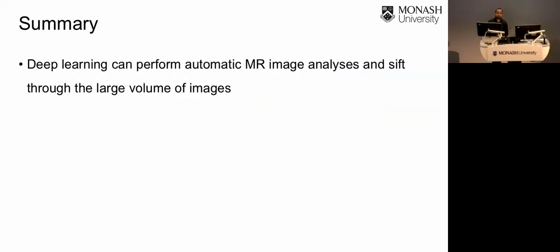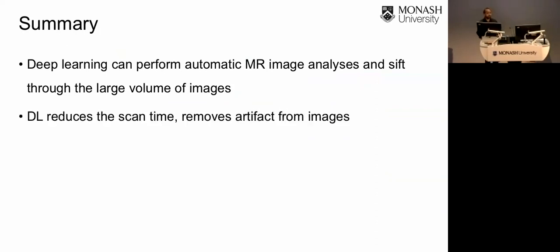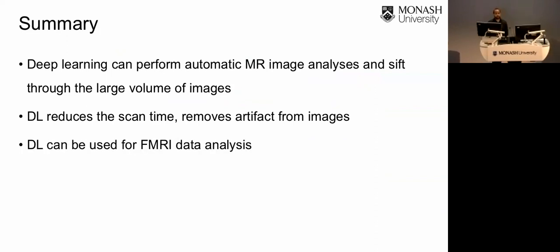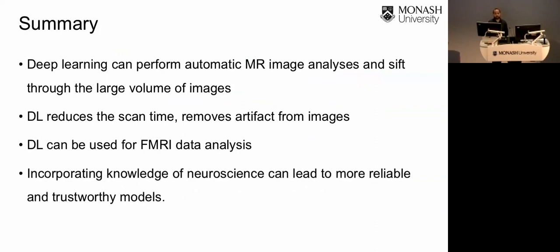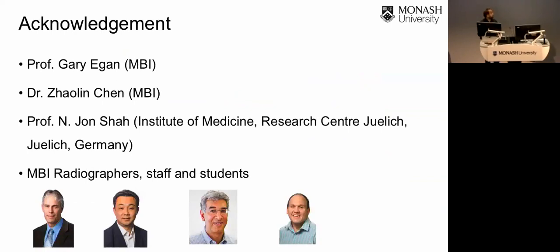In summary, deep learning can perform automatic MR image analysis and process large volumes of images. It can also help reduce scan time and correct for various kinds of artifacts. It has potential for fMRI data analysis, and incorporating neuroscience knowledge will lead to more reliable and trustworthy networks. Acknowledgments to Gary Egan (supervisor), Zhaolin Chen, John Shah, radiographers, and MBI staff and students.